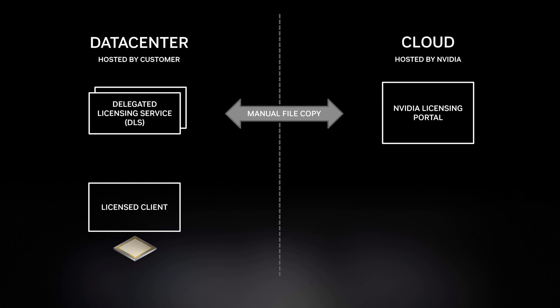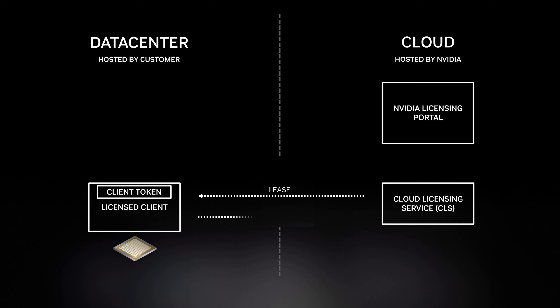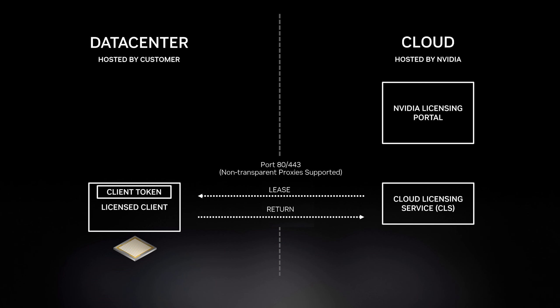The license client is typically a virtual machine running Windows or Linux. This model differs from our previous version in that we have a client configuration token that sits on the license client, and by talking to the delegated license server it will either lease or return a license based on requirements. The CLS is very similar to the DLS except it's hosted by us in the cloud, free of charge, and supports proxies if ports 80 or 443 aren't directly accessible.